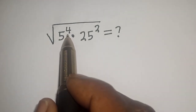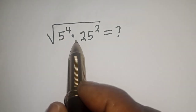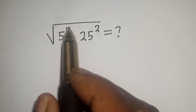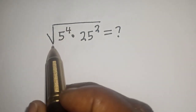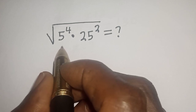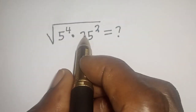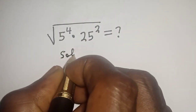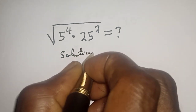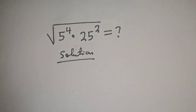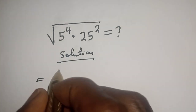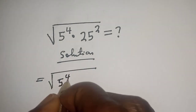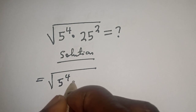Square root of 5 raised to power 4, multiplied by 25 squared, is equal to what? Hi everyone, welcome to my class. In this class we quickly want to evaluate this nice math problem. But before we proceed, please don't forget to like, share, comment, and subscribe.